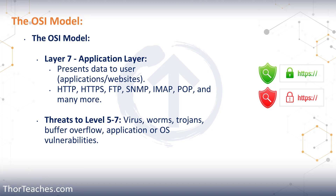On layer 7 we also have non-repudiation — that's where you can't deny having sent something or accessed something. We have our certificates and application proxies. This is also where we can do deep packet inspection that we can't do on any of the other layers, because we assume the data is encrypted. Since it doesn't get decrypted until layer 6, the first time we can look at the actual data is layer 7. The threats to layers 5, 6, and 7 are the same: viruses, worms, trojans, buffer overflows, and really any vulnerabilities in our systems or applications that can be exploited.